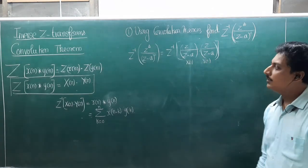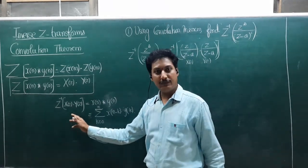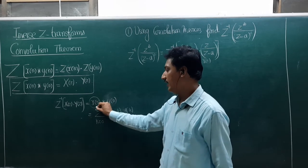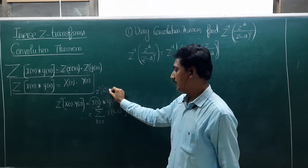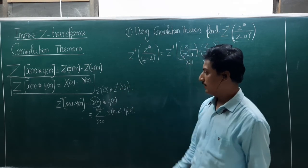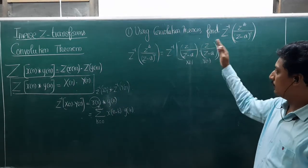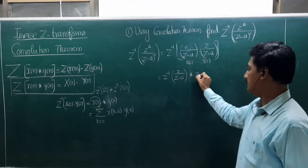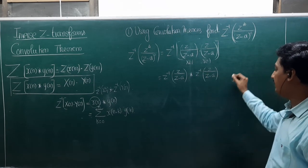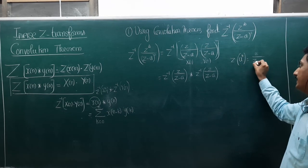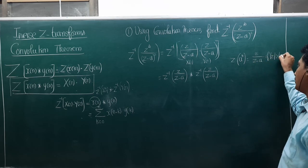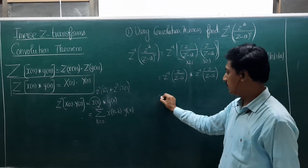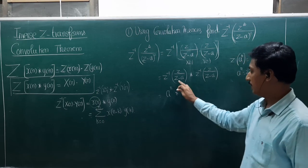This looks like the product of X(z) into Y(z) — unfortunately both are the same. By the convolution theorem, Z⁻¹[X(z)·Y(z)] = Z⁻¹[X(z)] star Z⁻¹[Y(z)]. So we get Z⁻¹[Z/(Z-a)] star Z⁻¹[Z/(Z-a)]. As we know, the Z-transform of a^n equals Z/(Z-a) with region of convergence |z| > |a|. Therefore Z⁻¹[Z/(Z-a)] = a^n, giving us a^n star a^n.